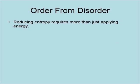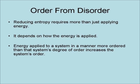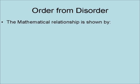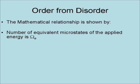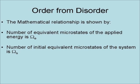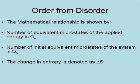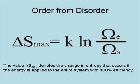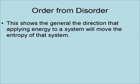Reducing entropy requires more than just applying energy — it depends on how the energy is applied. Energy applied to a system in a manner more ordered than that system's degree of order increases the system's degree of order. Energy applied in a manner more disordered than that system's degree of disorder increases the system's disorder. The number of equivalent microstates of the applied energy is omega sub E (Ω_E), and the number of initial equivalent microstates of the system is omega sub S (Ω_S). The change in entropy is delta S, and delta S max equals K · ln(Ω_E / Ω_S).